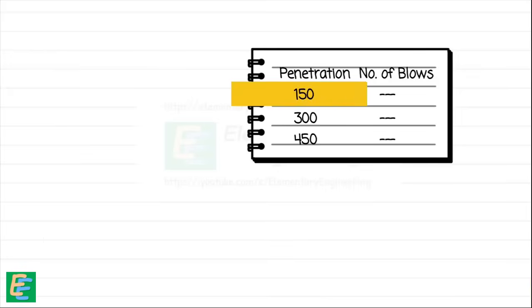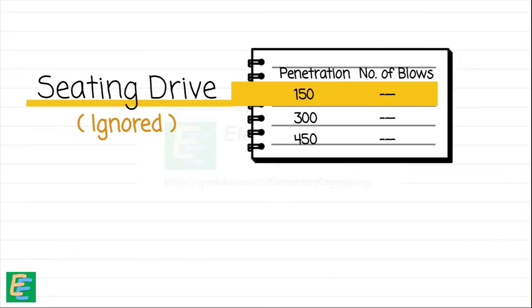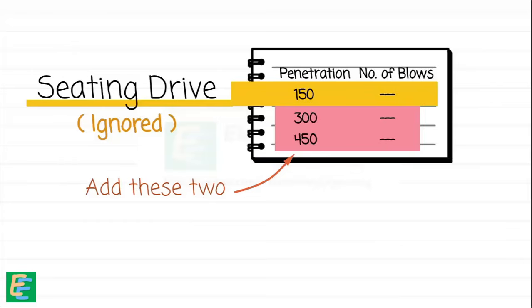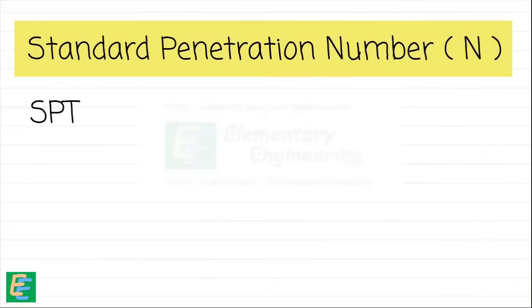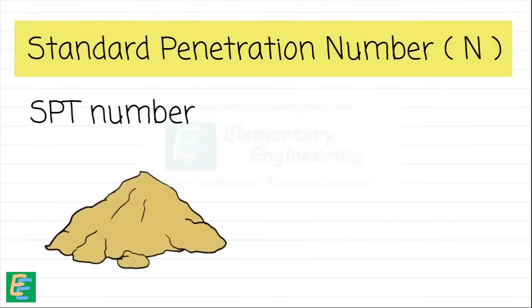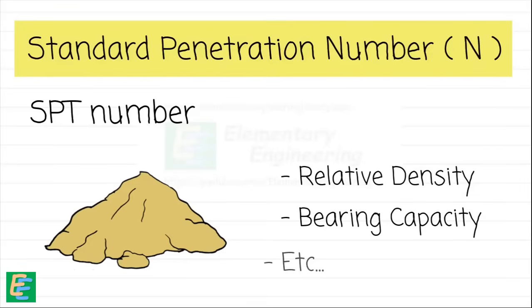The first 150 mm of penetration is called the seating drive and is usually ignored because it's mainly to get the sampler properly seated in the soil. While the number of blows recorded for the last two 150 mm intervals are added together, this sum gives us a number which is called the standard penetration number N. This SPT number is used to estimate the properties of soil such as relative density, bearing capacity, etc.